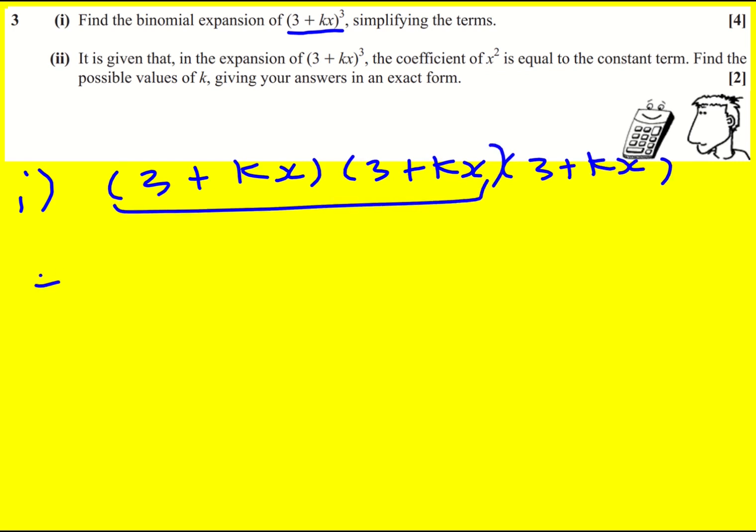So if I multiply these two out I'm going to get 9, then I'm going to get a 3kx and another 3kx, so 6kx plus k squared x squared.